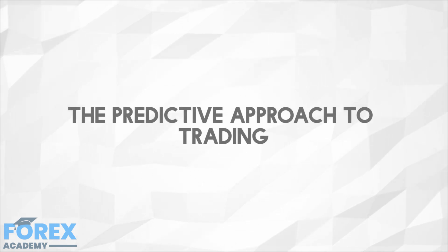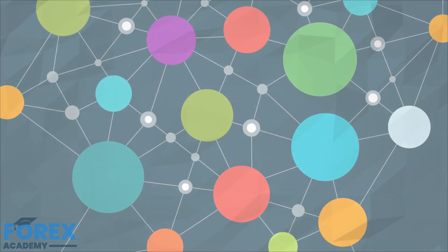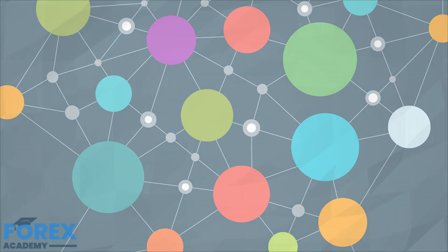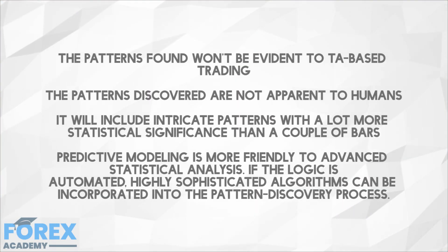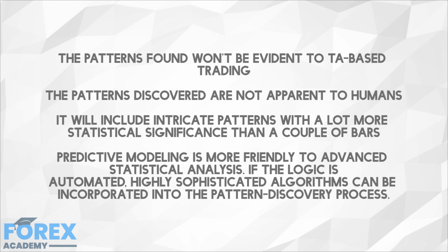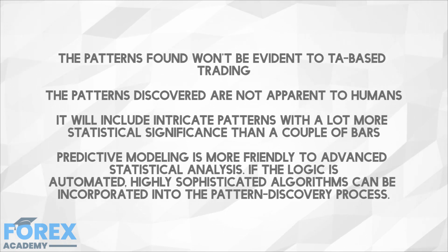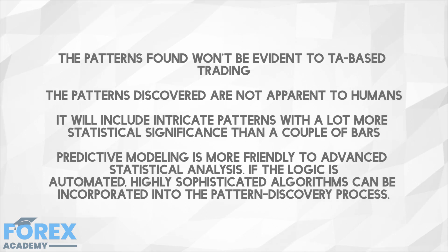A statistical model is different because it uses predictive modeling. It does this by employing mathematically sophisticated algorithms to examine historically derived indicators such as price, volatility, volumes, and trends, to identify a repeatable pattern that shows predictable potential. A predictive model could find relations between patterns and a forward-looking target variable. This technique has multiple benefits: the patterns found won't be evident to TA-based trading, the patterns discovered are not apparent to humans, it will include intricate patterns with a lot more statistical significance than a couple of bars, and predictive modeling is more friendly to advanced statistical analysis. If the logic is automated, highly sophisticated algorithms can be incorporated into the pattern discovery process.